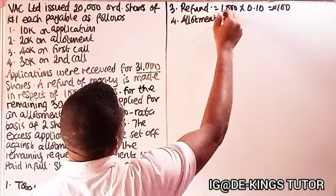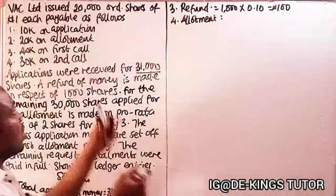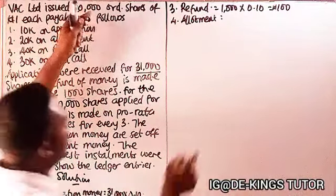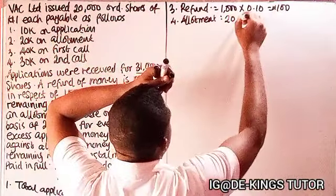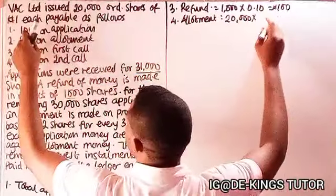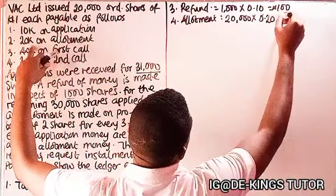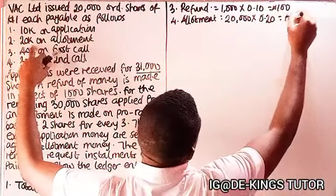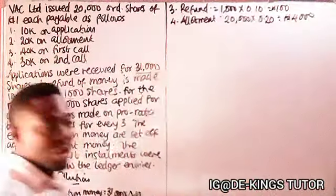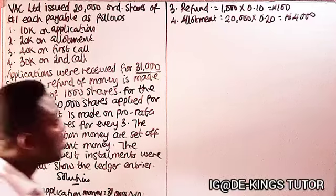Fourth, on allotment, remember they can only allot the amount of shares that was issued. So it will be 20,000 times the allotment money of 0.20, which equals 4,000. So four thousand is the total allotment money due.